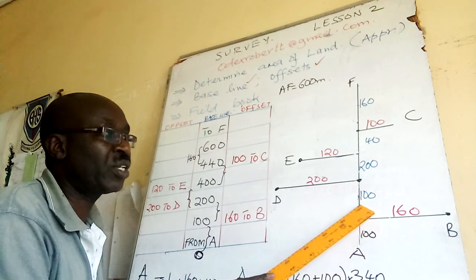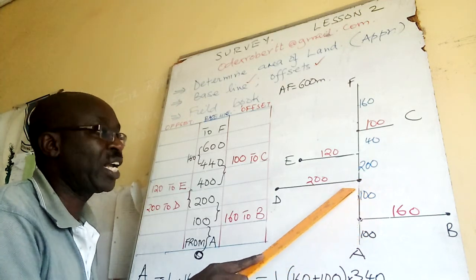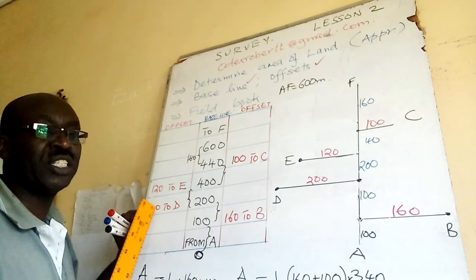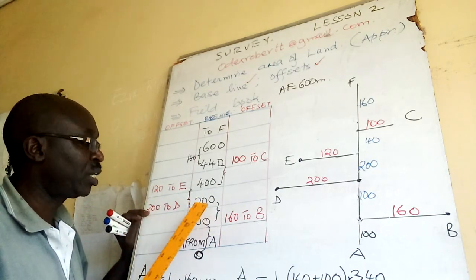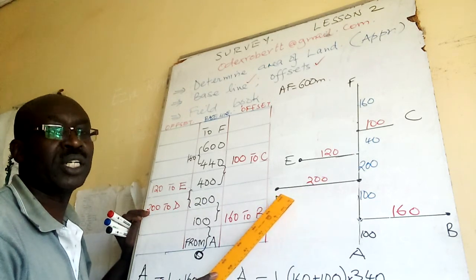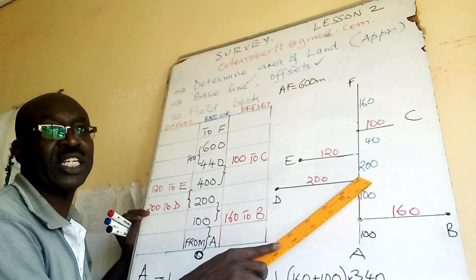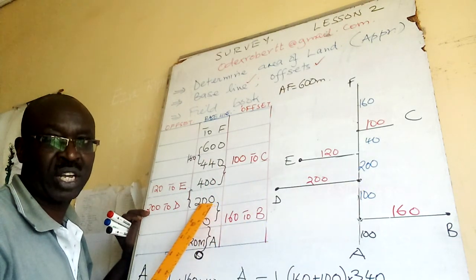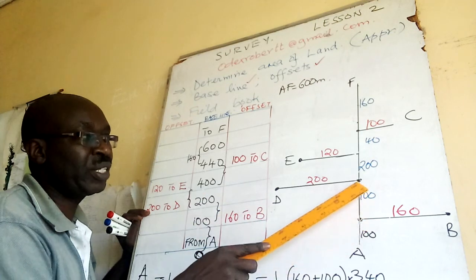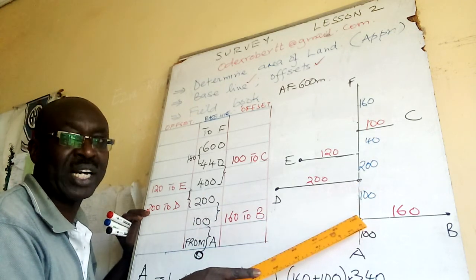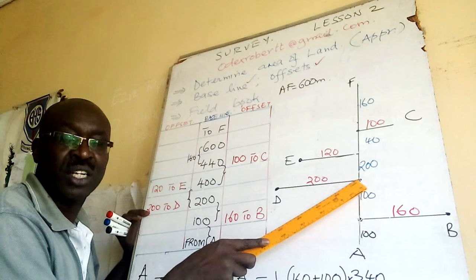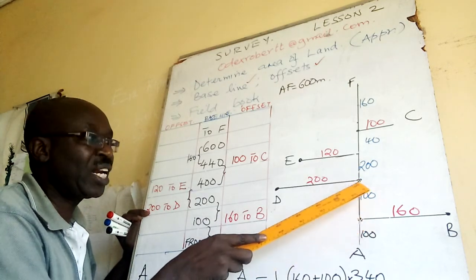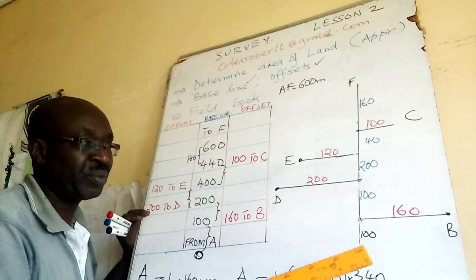The next offset is at level 200 from A — not from the previous point, but from A. From A up to the first offset is 100, so the difference is 100. I reach the second offset: 200 to D. The space between level 1 and level 2 is 200. When you add 100 and 100 you get 200.